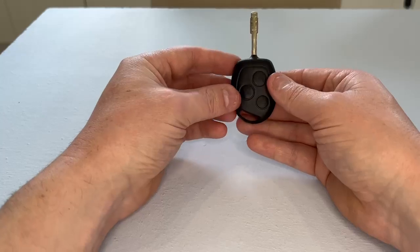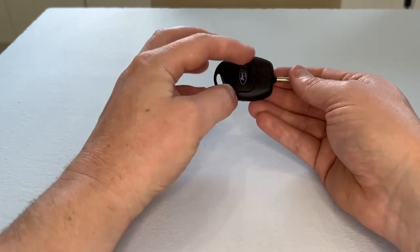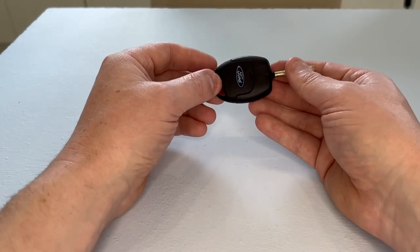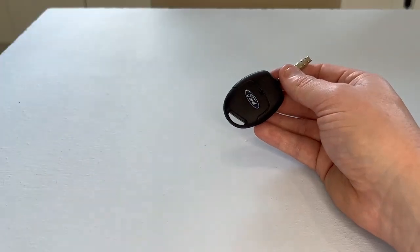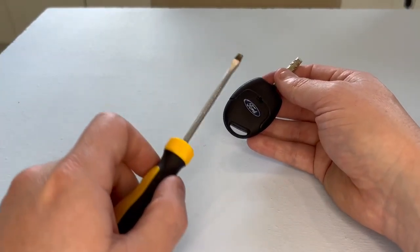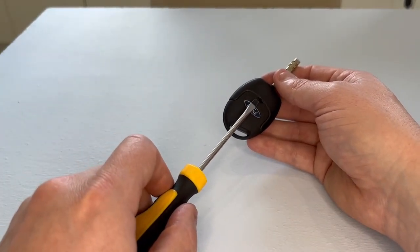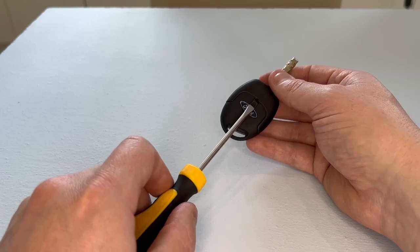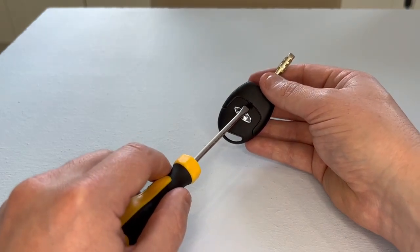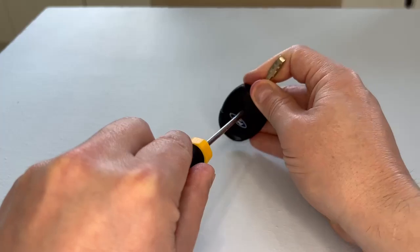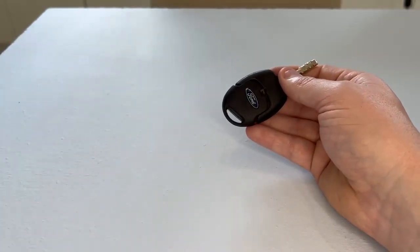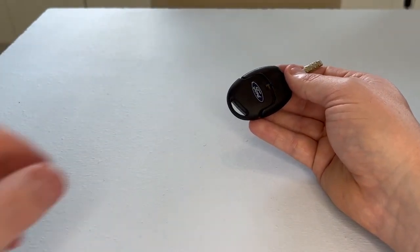First thing we need to do is split the two halves of the case from top to bottom. We do so by getting our flat-headed screwdriver, and in the back of the fob there's an indentation where we can pop the blade in, like so, and prise it away, releasing the catch that's inside.